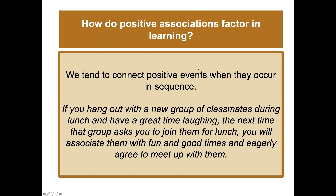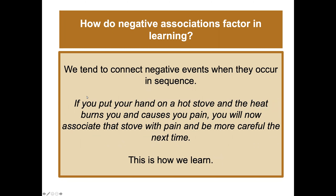Associations can be positive or negative. We tend to connect positive events when they occur in sequence — if you hang out with a new group of classmates during lunch and have a great time laughing, the next time that group asks you to join them you'll associate them with fun and eagerly want to meet up. This goes for restaurants too — if you go somewhere with good friends you associate it with a great time.